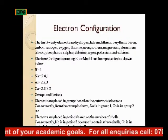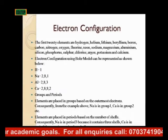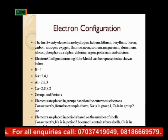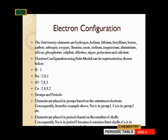The first 20 elements are: Hydrogen, Helium, Lithium, Beryllium, Boron, Carbon, Nitrogen, Oxygen, Fluorine, Neon, Sodium, Magnesium, Aluminium, Silicon, Phosphorus, Sulfur, Chlorine, Argon, Potassium, and Calcium. From atomic numbers 21 to 30, they are transition elements starting from Scandium. Electron configuration using the Bohr model can be represented as shown below.